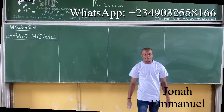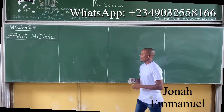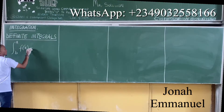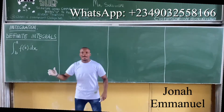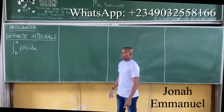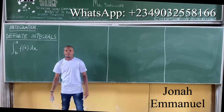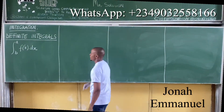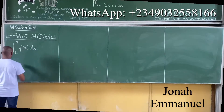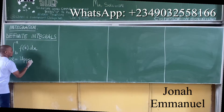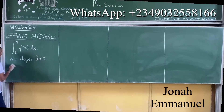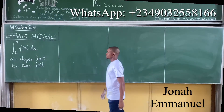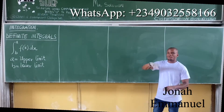Let's consider definite integrals. Definite integrals are integrals in the form where you have A and B, which are called the limits of the integrals. A is called the upper limit and B is called the lower limit. So it's called the definite integral.